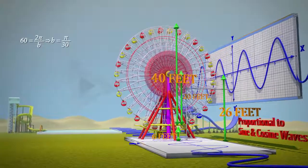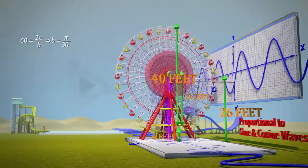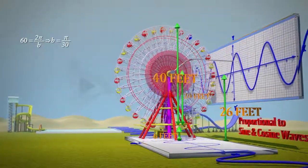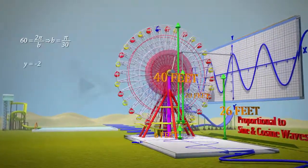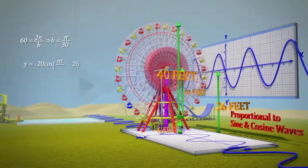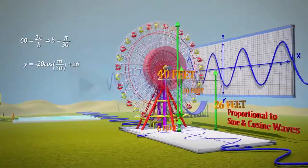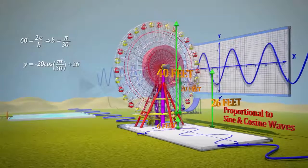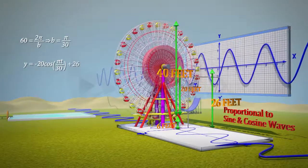Thus, the vertical parameterization is y = −20·cos(πt/30) + 26.